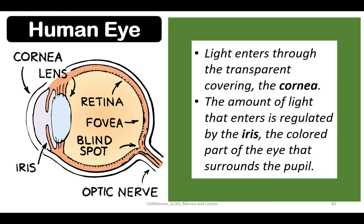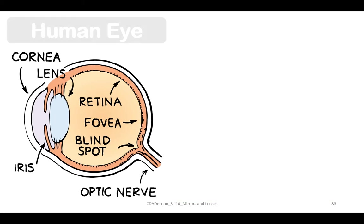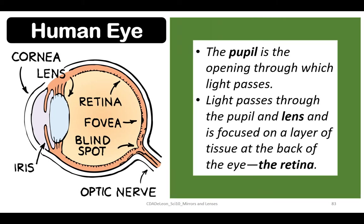The human eye: light enters through the transparent covering called the cornea. The amount of light that enters is regulated by the iris, the colored part of the eye that surrounds the pupil. The pupil is the opening through which light passes. Light passes through the pupil and lens and is focused on a layer of tissue at the back of the eye, which is the retina.